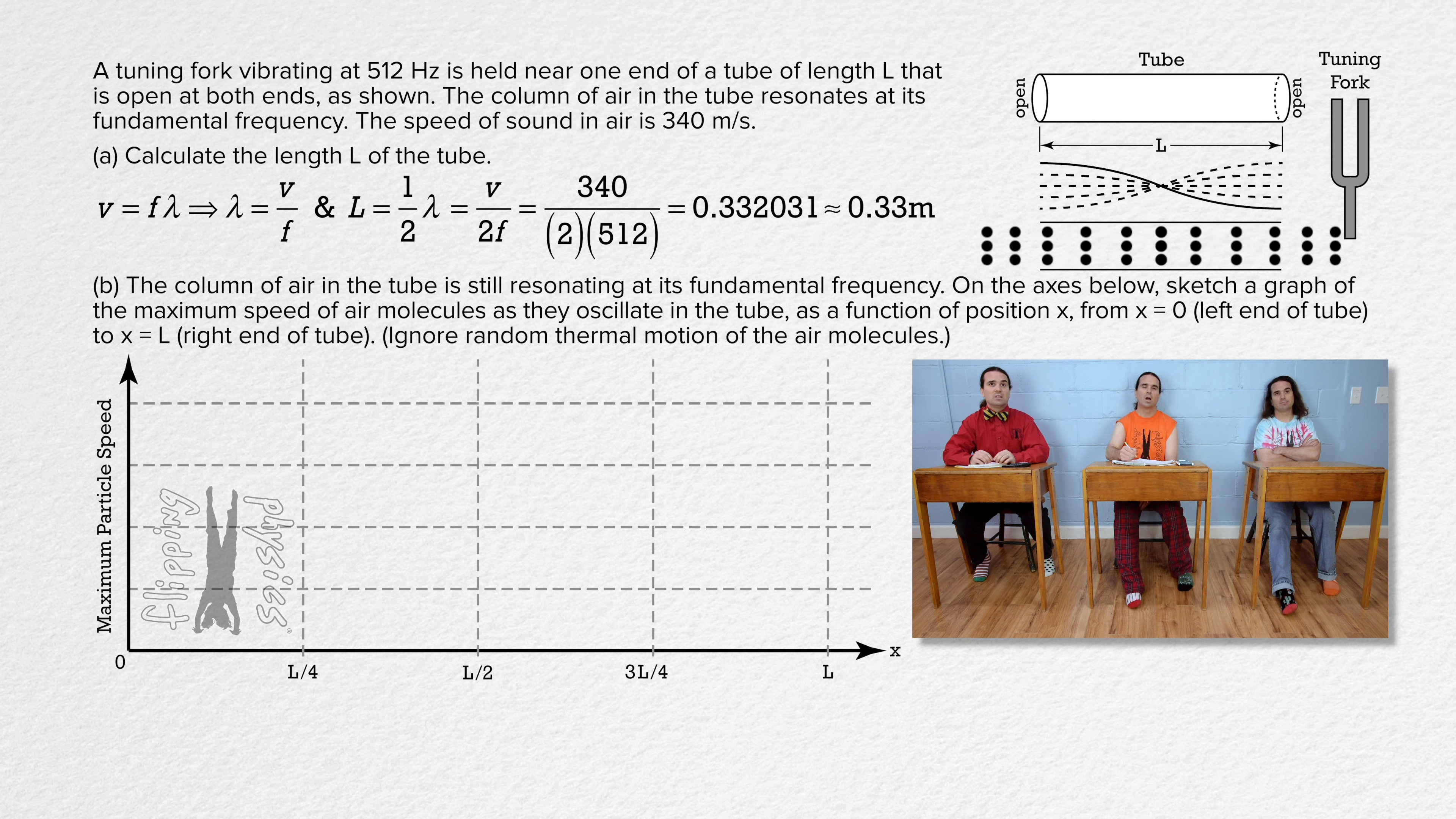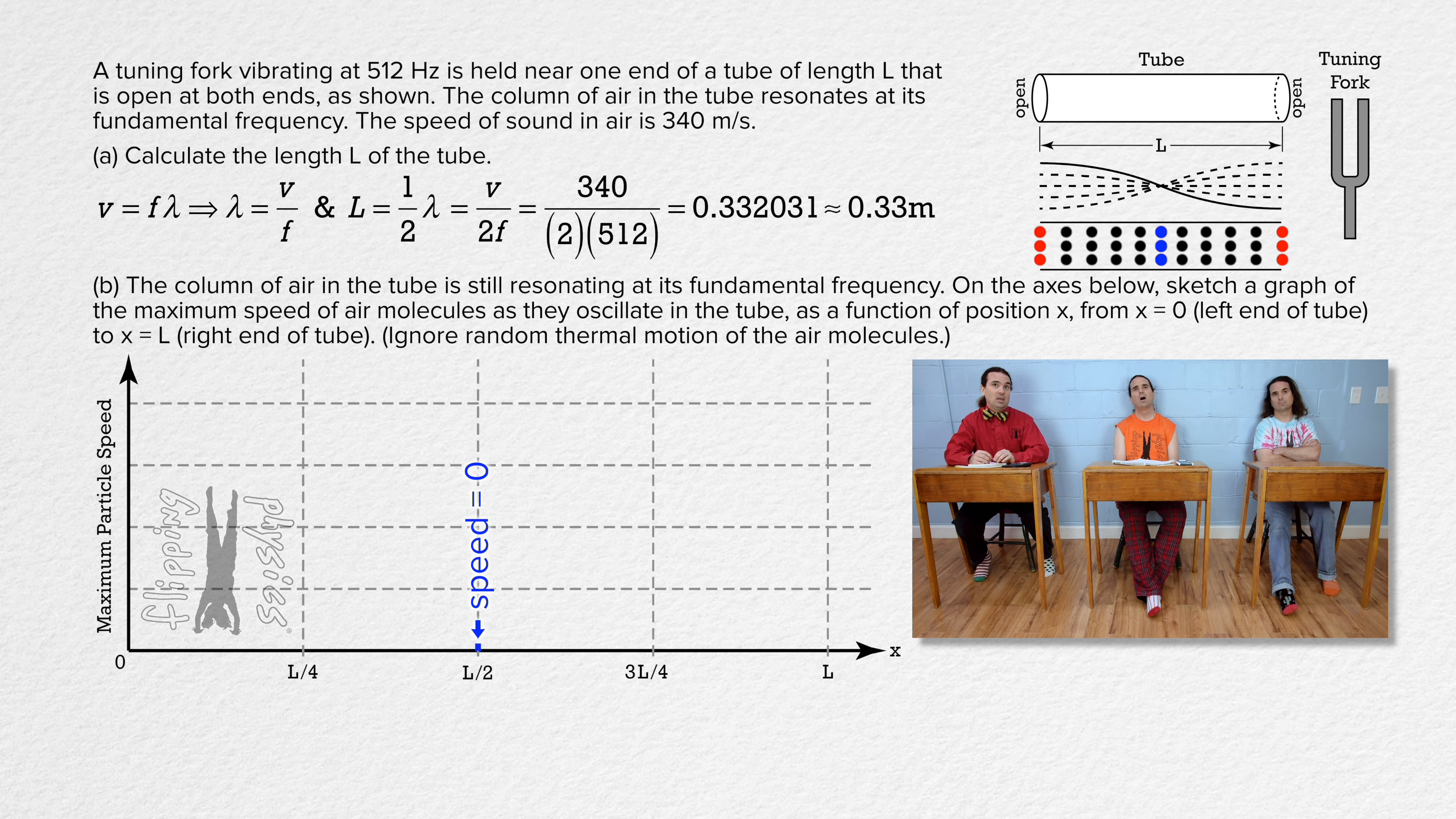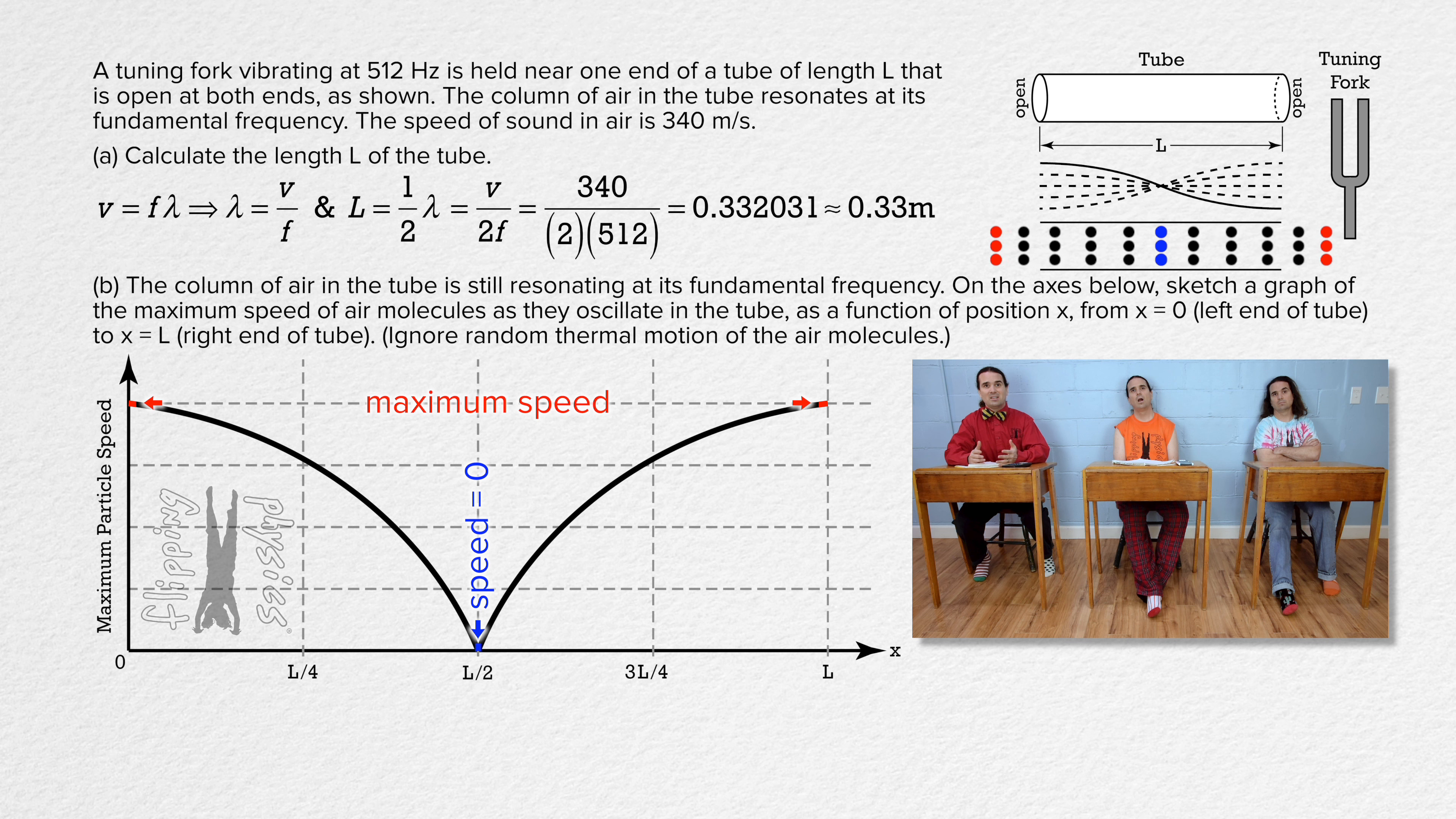So, at the displacement node in the middle of the tube at x equals L over 2, we can see in the animation that the air molecules are not moving at all. That's what a node means. All the waves cancel out and produce no wave at all. That is called total destructive interference. At both ends of the tube, there are displacement antinodes and we can see in the animation that the air molecules there have the largest speed. Therefore, at x equals 0 and x equals L put a mark at the top of the graph. Between those points, well, I'm not really sure what the curve looks like. However, I know it is vertically symmetrical about x equals L over 2 and I'm guessing it's concave down. So, that is what I think it looks like.